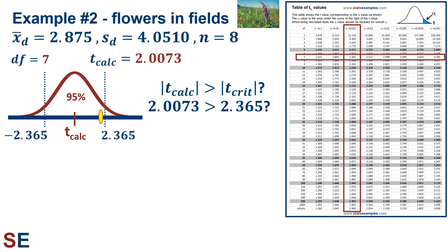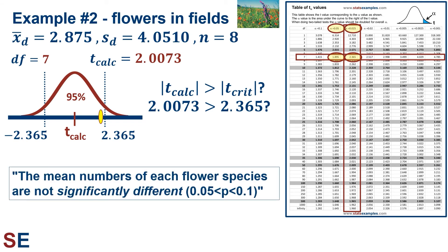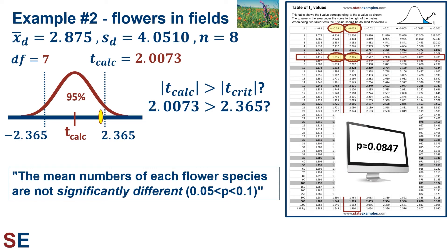We calculate the t-value, obtaining t-calculated = 2.0073 with 7 degrees of freedom. Comparing to the critical value of 2.365 for 7 degrees of freedom at α=0.05, our calculated value of 2.0073 is not as extreme — it falls within the center 95% of the t-distribution. The p-value is larger than 0.05. The t-calculated value lies between 1.895 and 2.365, corresponding to overall p-values of 0.1 and 0.05, so 0.05 < p < 0.1. The computer gives p=0.0847. We cannot conclude that the two flower species differ in their abundance.